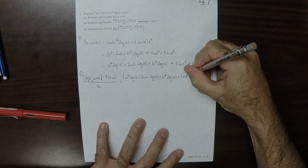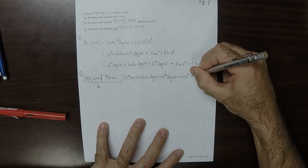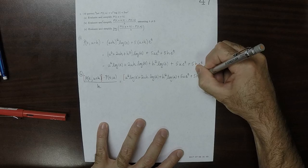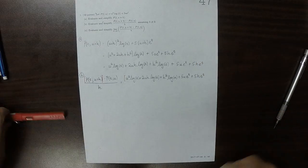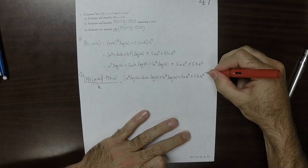Plus 5u exponential t plus 5h exponential t. So all of that in red.